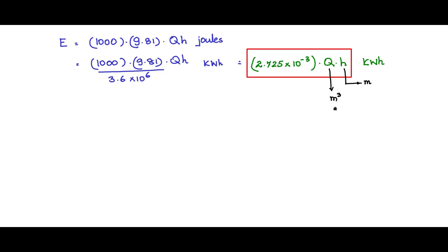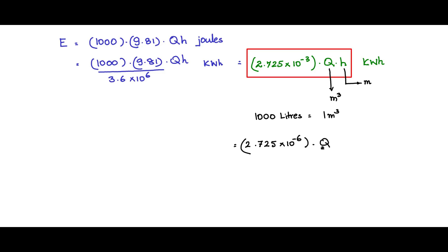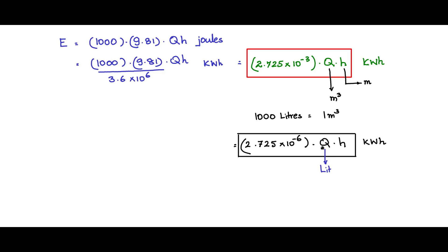In this expression q is in cubic meters. However, a much more common and intuitive unit for q is liters, and it is much easier to imagine in liters than in cubic meters. The relationship is 1000 liters equals 1 cubic meter. Therefore, if you want to express the equation with q in liters, replace 10⁻³ with 10⁻⁶ — essentially dividing q by 1000 — giving 2.725×10⁻⁶ × q × h kilowatt-hours, where q is in liters.